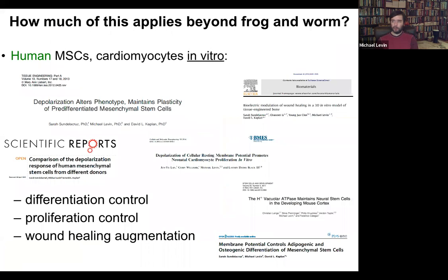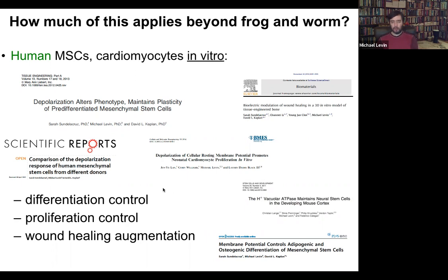This is not just things that apply to frog and worm. We've done some work with David Kaplan, Lauren Black, and others on human mesenchymal stem cells and cardiomyocytes. You can control differentiation, proliferation, wound healing. But I think what bioelectricity is really for — in terms of why evolution uses it and why we should be interested — is because it allows us to exploit the modular nature of the anatomical decision-making, because we can control very large-scale outcomes without micromanaging the details.